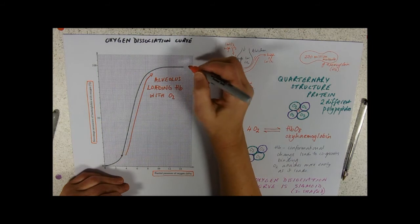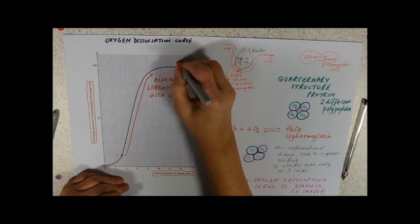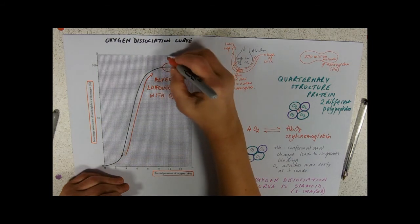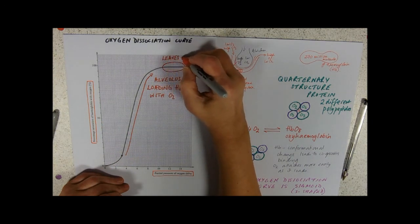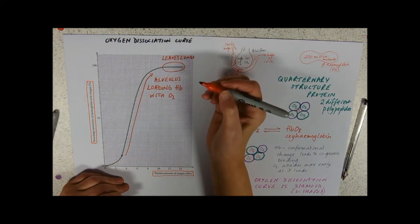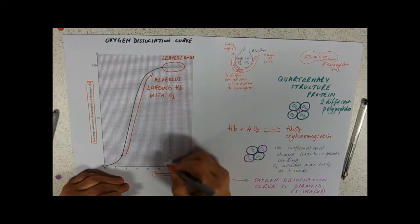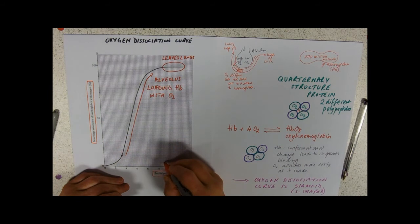Pretty much as the blood leaves the lungs going back to the left hand side of the heart, it's going to be leaving with a lot of oxygen in it. That's because the partial pressure of the air in the alveolus is kind of over here somewhere.